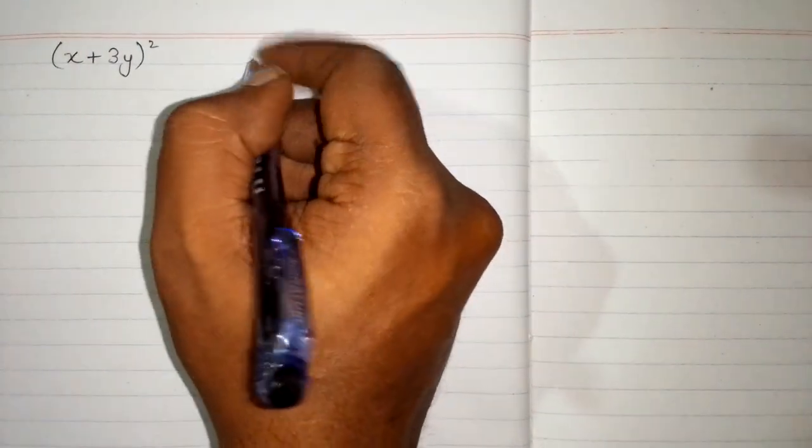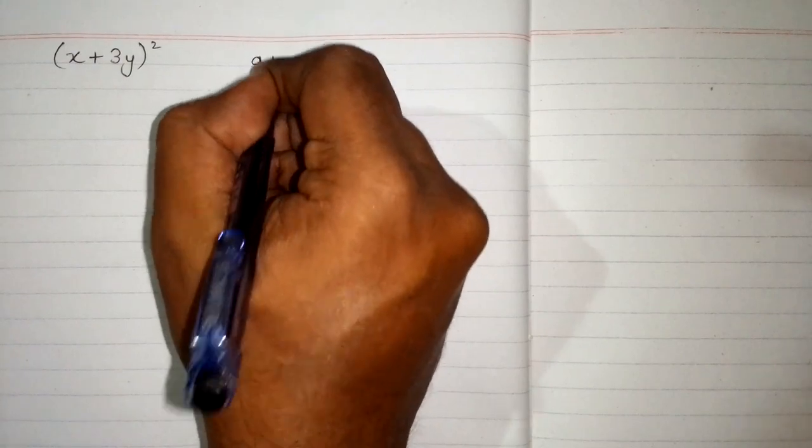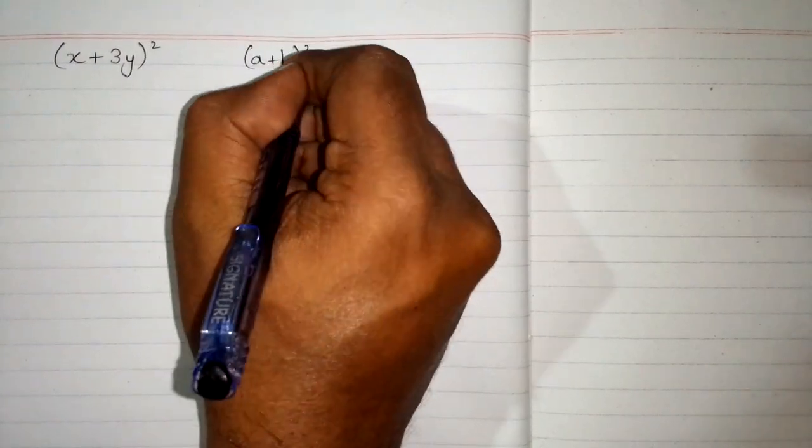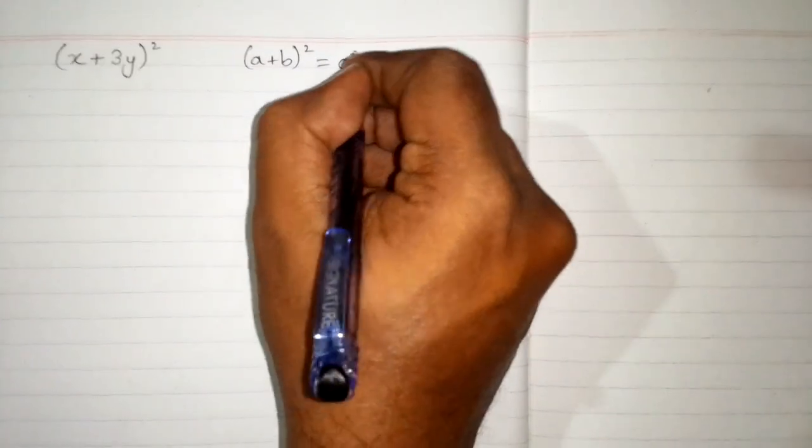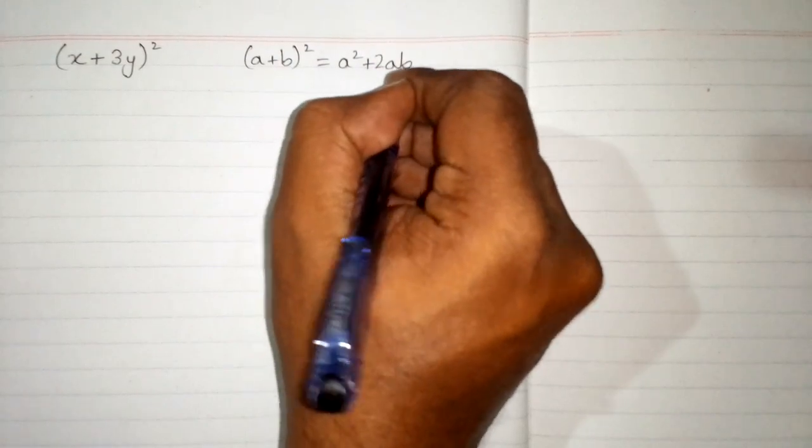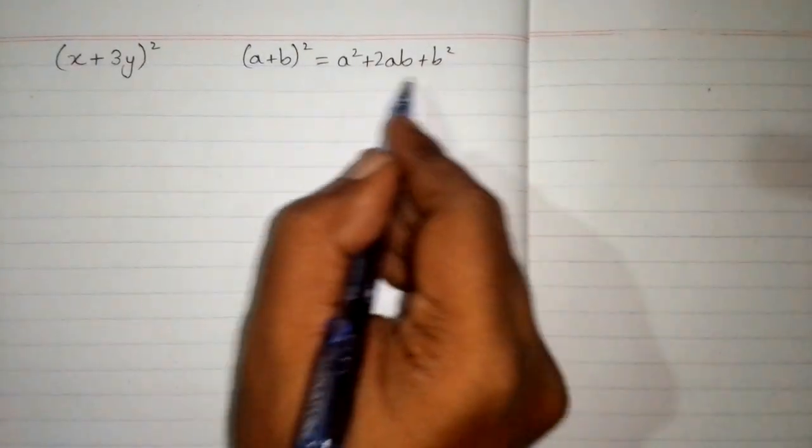In this video we will expand (x + 3y) whole square. We will use the algebraic identity which is (a + b) whole square is equal to a² + 2ab + b².